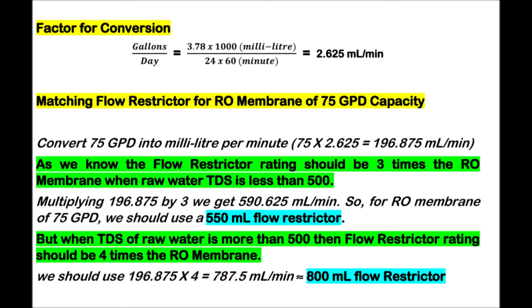For an example, let's find the matching flow restrictor for an RO membrane of 75 GPD capacity. First, convert 75 GPD into milliliter per minute, which equals 196.875 ml/min. As we know, the flow restrictor rating should be 3 times the RO membrane capacity when raw water TDS is less than 500. Multiplying 196.875 by 3, we get 590.625 ml/min. So for an RO membrane of 75 GPD, we should use a 550 ml flow restrictor.